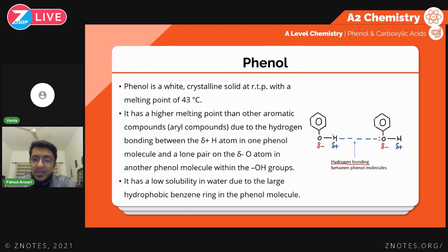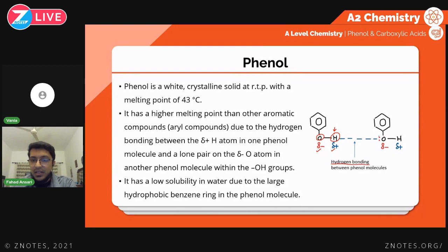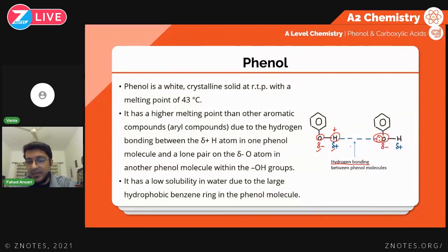For hydrogen bonding, you need a hydrogen atom that is covalently bonded to a highly electronegative atom — either fluorine, oxygen, or nitrogen. Here we have oxygen. This creates a very strong dipole: the oxygen being more electronegative has a partial negative charge, the hydrogen has a partial positive. We have a permanent dipole, and when this bonds to another electronegative atom, the partial positive hydrogen in one molecule bonds to a lone pair on the oxygen in another phenol molecule, giving a very strong hydrogen bond. Because of that, phenol is a solid with a relatively high melting point.